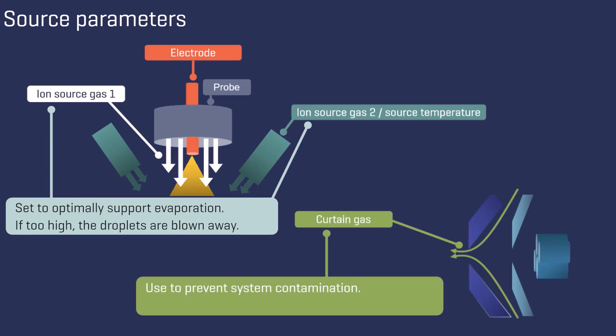The curtain gas is an important parameter that prevents system contamination. It should be set as high as possible without significant loss of sensitivity.